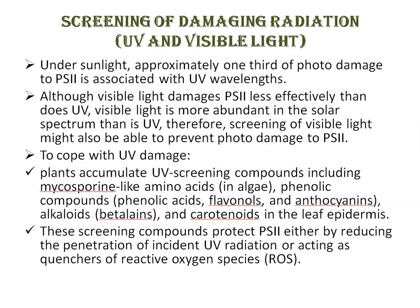Plants accumulate UV screening compounds including mycosporine-like amino acids in the case of algae, phenolic compounds such as phenolic acids, flavonoids, and anthocyanins, then alkaloids, betalains, and carotenoids in the leaf epidermis. Screening compounds protect Photosystem II either by reducing the penetration of incident UV radiation or by acting as quenchers of reactive oxygen species.